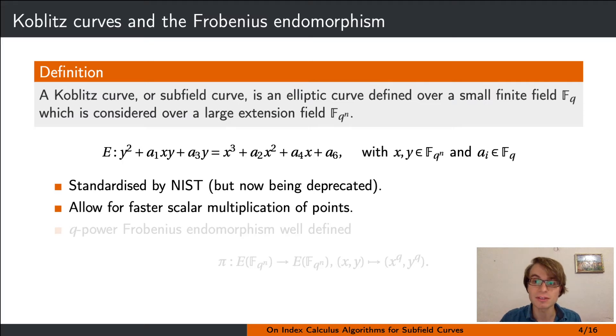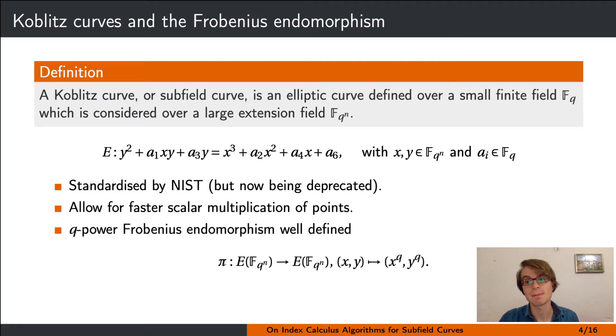The reason for that is the q-power Frobenius endomorphism, which is well defined on Koblitz curves. That is the map which sends a point to another point on the curve by raising the coordinates to the q power. A natural question to ask is whether we can use the Frobenius endomorphism on Koblitz curves for cryptanalysis of the ECDLP.